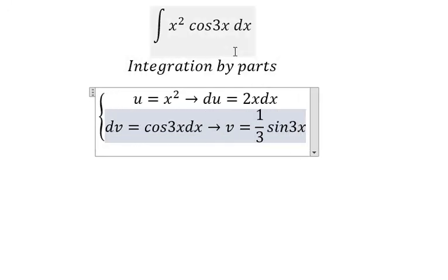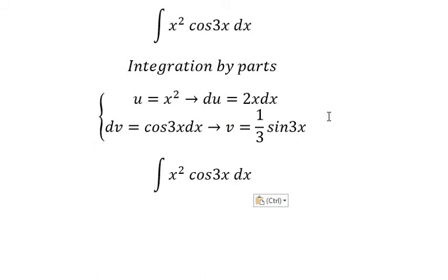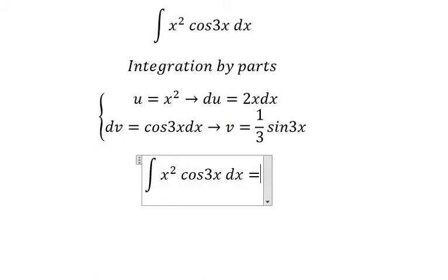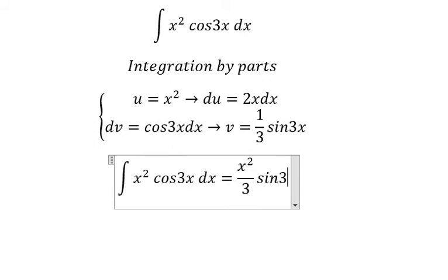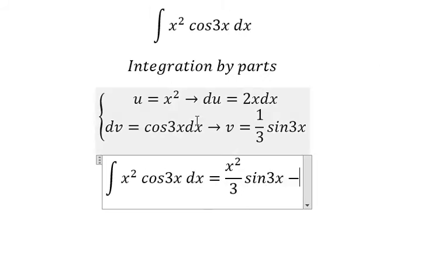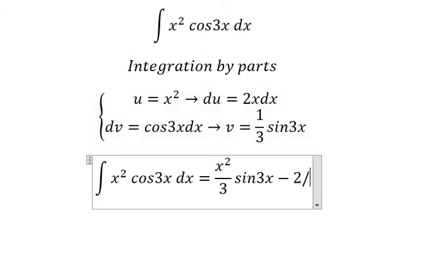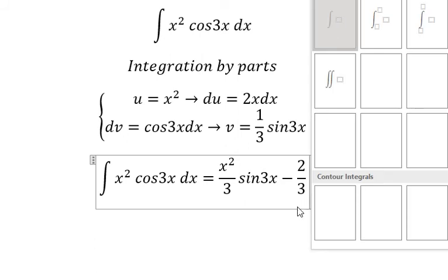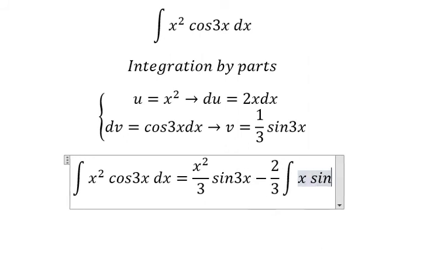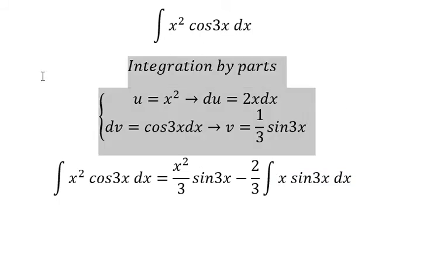Next we have u multiplied by v, so we have x squared over 3 sin 3x minus du multiplied by v, so we have 2 over 3 and we have the integration x sin 3x dx. So we use the same technique, integration by parts for this one.